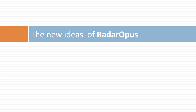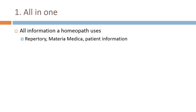When in 2006 we started dreaming of our third generation of homeopathic software, the first main idea was to imagine a program that manages all information a homeopath uses — meaning repertory information, Materia Medica information, and patient information.